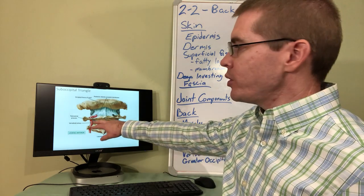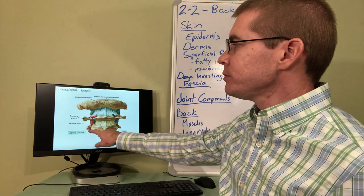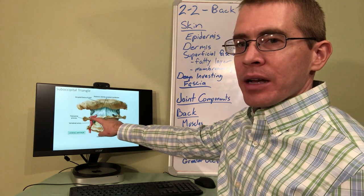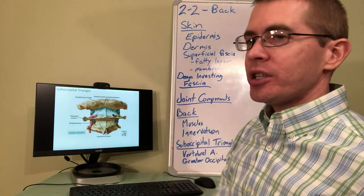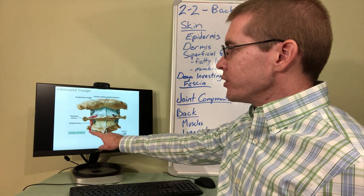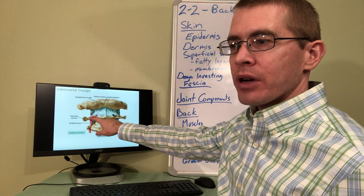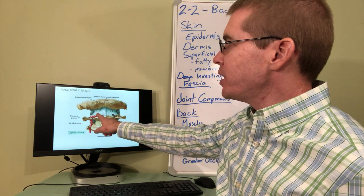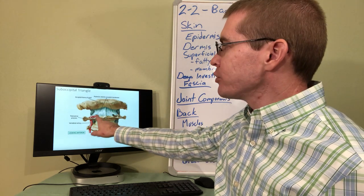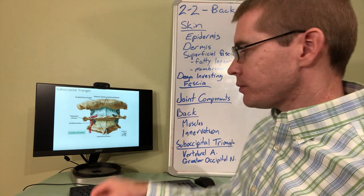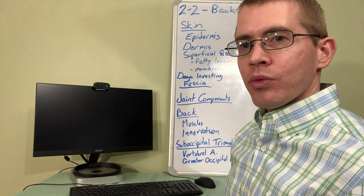The vertebral artery travels superiorly through the transverse foramina, and at the suboccipital triangle we will see its horizontal portion. The vertebral artery traveling superiorly takes a turn just above the C1 vertebra to travel horizontally, then pierces the membrane between C1 and the occipital bone and travels through the foramen magnum to enter the cranial vault. That's the end of this lecture — see you next time.